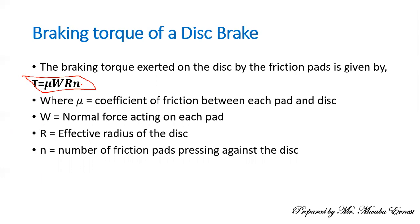Count how many brake pads are actually pressing against the disc to determine n. In the diagram, you have the brake pads, a piston that pushes them, and brake fluid that provides the force to close the clearance. You also have the hub, and the disc or rotor. The effective radius r is what we are interested in for calculations.